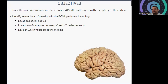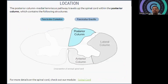Here we are going to identify the location of cell bodies, location of synapses between first and second order neurons, and the level at which the fibers are going to cross the midline. First of all, talking about locations: the posterior column medial lemniscus pathway travels up to the spinal cord within the posterior column, which contains the following structures.